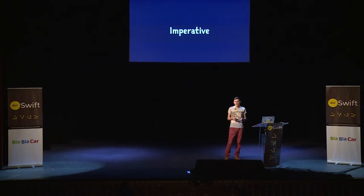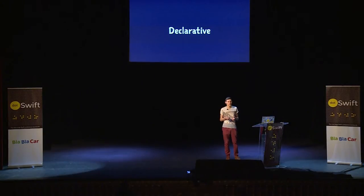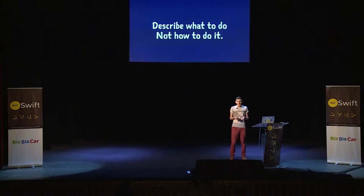In Objective-C, we've commonly used the imperative paradigm style. In contrast, there's a declarative way to do it, and this gives us a lot easier, more readable code. Lots of new things like functional programming and functional reactive programming make use of this to make it easier to read and build better stuff. It allows us to describe what we do, not how we do it.